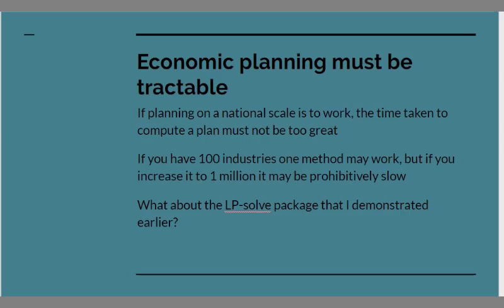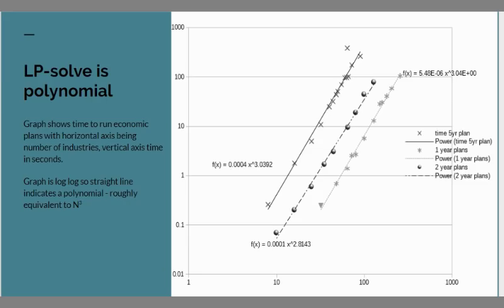What about the lpsolve package whose planning application I demonstrated earlier? Well, if you run it, and this is running the n-year plan package that I released on GitHub, you find that if along the x-axis we show the number of industries we're planning, on the y-axis we show the number of seconds it takes to plan them, and this is planning one year ahead, this is planning two years ahead, this is planning five years ahead. What we see is that these form straight lines on a log-log plot, and if you have something which is a straight line on a log-log plot it's basically a polynomial function, and the order of the polynomial is given by the slope, and if we compute the regression we find that these things are all of order roughly three.